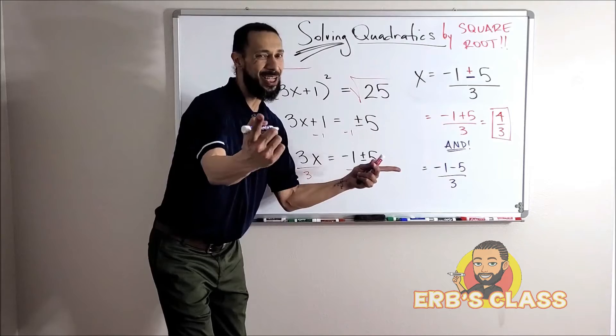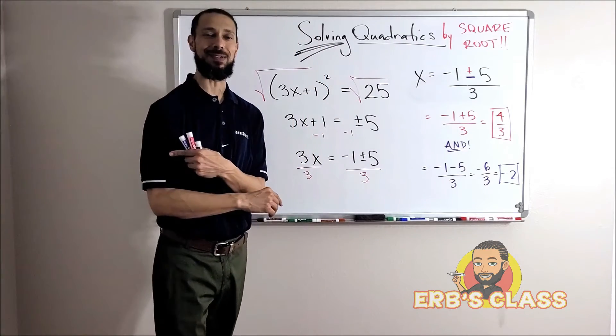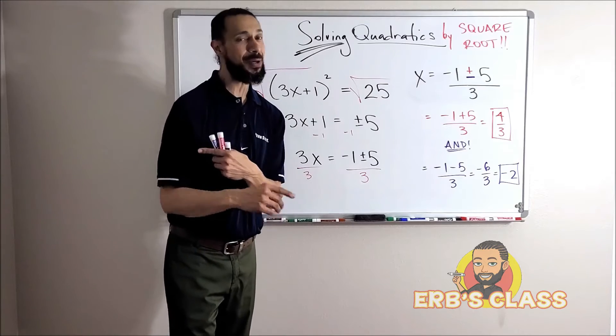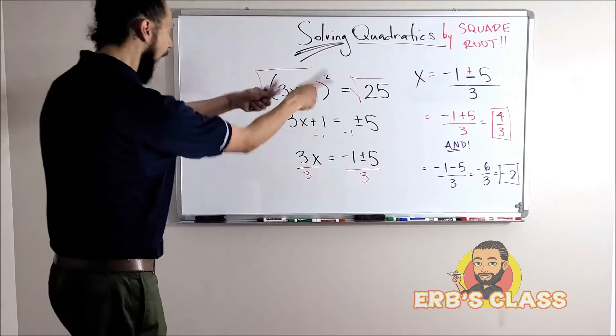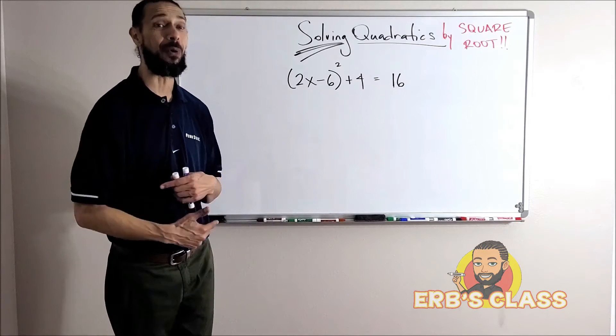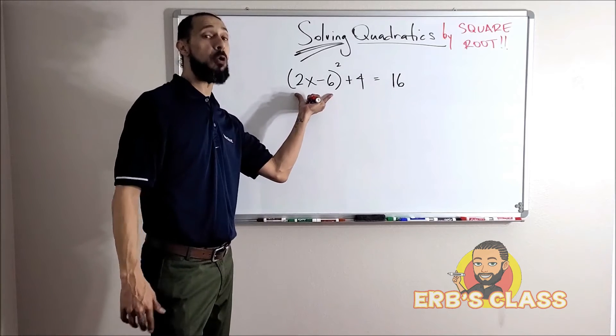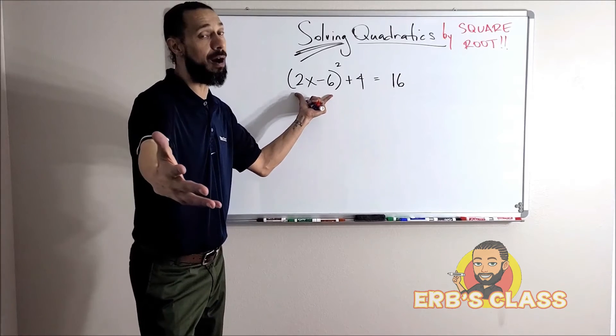I think we got time for one more. Oh okay, okay, okay. This is a good one. We can do this one. You deserve a break. All right, you know the drill, we got to get this thing alone so we can take a square root.